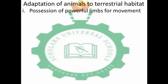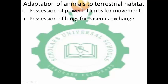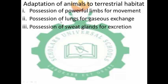The first adaptive feature is the possession of powerful limbs for movement. The possession of lungs for gaseous exchange — instead of animals in aquatic habitat which use gills, terrestrial animals use lungs for gaseous exchange. Also the possession of solid organs for excretion.